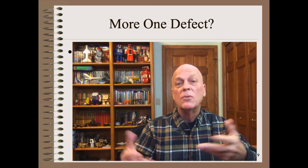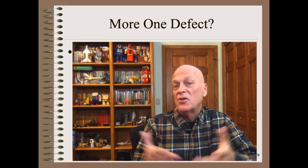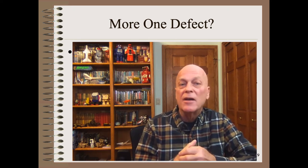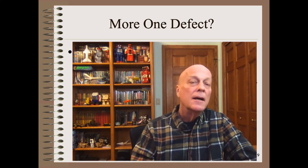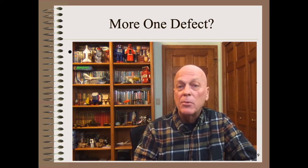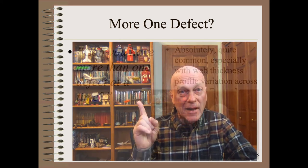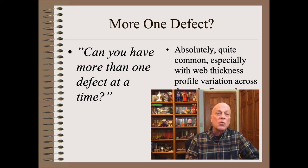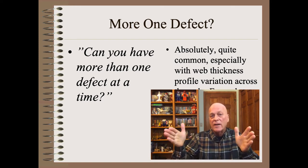Of course, most people have more than one winding defect in their plant. This should not surprise you, because there are many defects, many products, many winders, and many variables in any single plant. However, what most people do not know is that you can have more than one defect in the very same single wound roll — it is quite common, especially if you have web thickness profile variations across the width of the web.